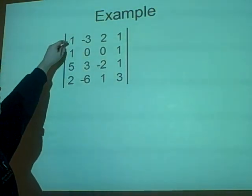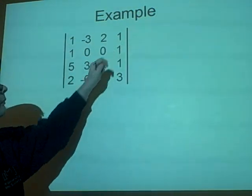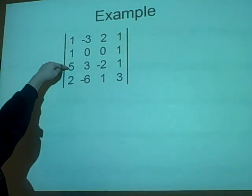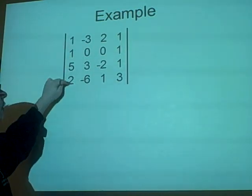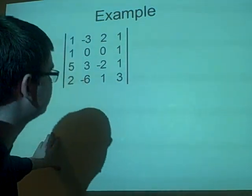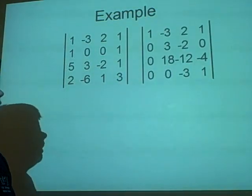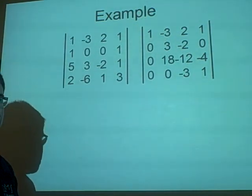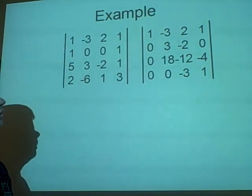So, if we subtract this row from this row, and we subtract five of this row from this row, and two of this row from this row, then that will give you this. And, like I said, the determinant is the same, because we've only added or subtracted rows. We did that in the last lecture.